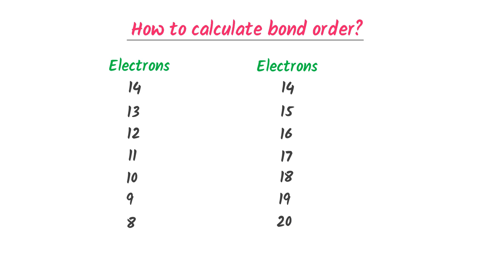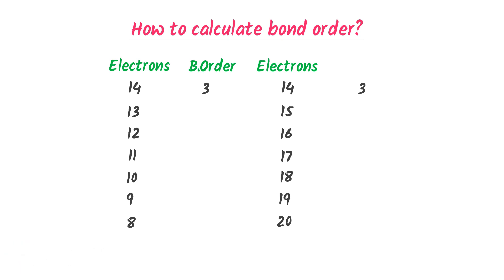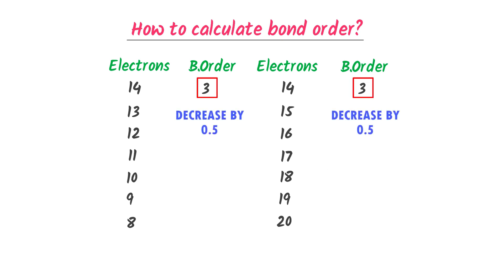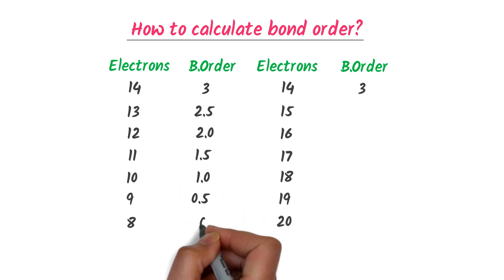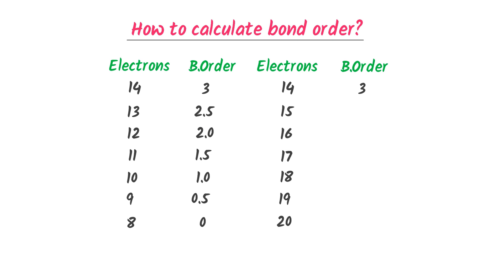Secondly, I write 3 here and also 3 there. This is the column of bond orders, and this is also the column of bond orders. Now listen carefully — I decrease the 3 by 0.5 in both columns. Here I get: 2.5, 2.0, 1.5, 1.0, 0.5, and 0. Similarly, there I get: 2.5, 2.0, 1.5, 0.5, 1, and 0.